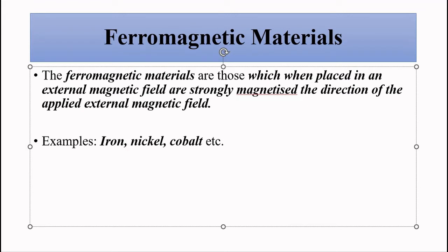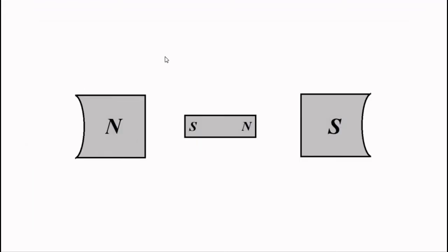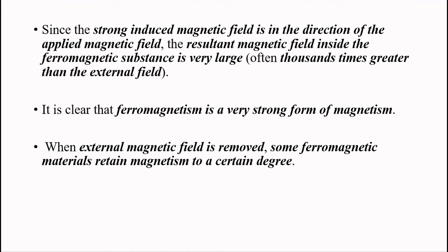Ferromagnetic materials behave in the same way as paramagnetic — when placed in an external field they acquire attractive type characteristics, meaning the end facing the north pole of the external field acquires a south pole, and the end facing the south pole acquires a north pole. That's why ferromagnetic materials acquire attractive type magnetic characteristics. However, the magnetic behavior induced in ferromagnetic material is very, very strong.